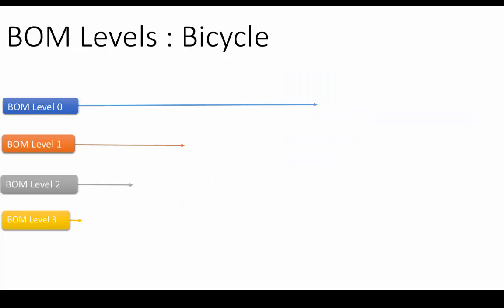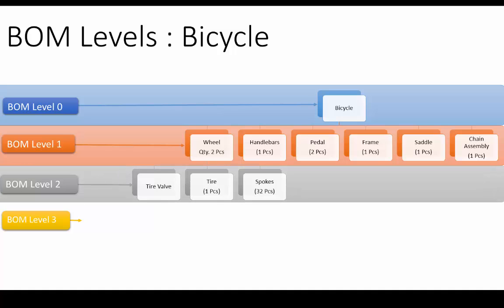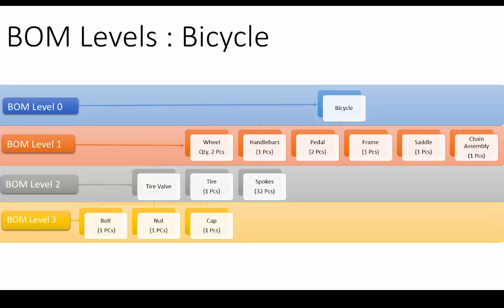Let us review another important concept: BOM levels. Components in the BOM hierarchy are classified using the BOM level. The finished good is always at level 0. Taking the bicycle BOM as an example, bicycle being the finished good is at BOM level 0. Bicycle is made up from wheel, handlebars, pedals, and frame, and these components are at level 1. Wheel is made up from sub-components like tire, tire valve, and spoke, which are level 2 components. Tire valve is made up from bolt, nut, and cap, which are level 3 components. BOMs can consist of as many levels as necessary. In this case, wheel is the sub-BOM at BOM level 1 and tire valve is the sub-BOM at level 2.